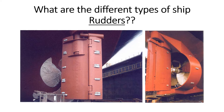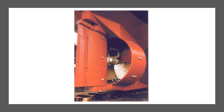The rudder is usually located in the water flow aft of the propeller, as you see in the video. Depending on the type of ship, the area of the rudder ranges from about one and a half percent to ten percent of the underwater lateral area. The underwater lateral area is equal to the length of the vessel multiplied by draft.